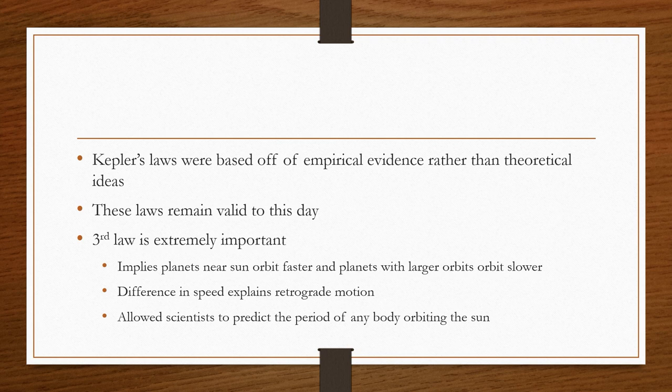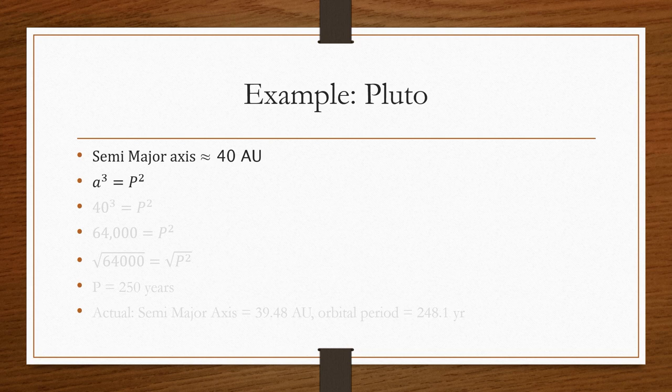Kepler's laws were based off of empirical evidence rather than theoretical ideas. He actually had physical findings, physical measurements in order to do this. These laws actually remain valid to this day. The third law is extremely important. Later, scientists realized these laws could all be derived from the fundamental laws about nature of motion and gravity. But the third law is the most important. Because it implies that planets nearer the sun orbit faster, and planets with larger orbits orbit slower. This difference in speed explained retrograde motion. And it allowed scientists to predict the period of any body orbiting the sun.